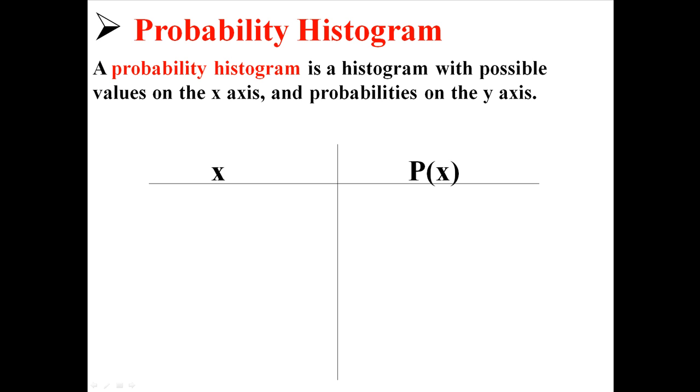So I'm going to create a probability distribution right here. I'm just going to make up some x values: 1, 2, 3, and 4, and I'm going to make up some probabilities to be associated with those: 10 percent, 15 percent, 35 percent, and 40 percent.